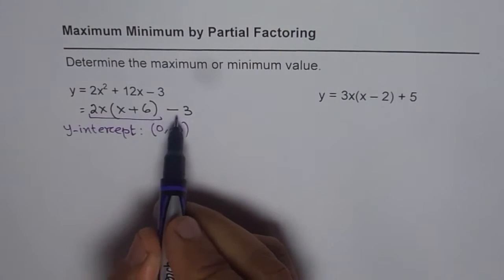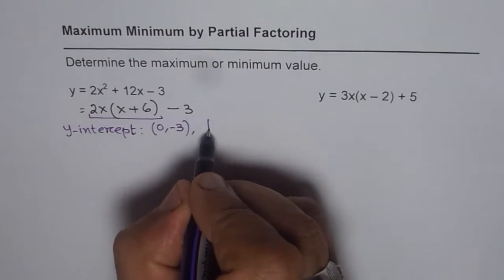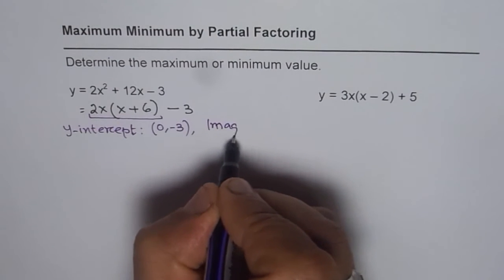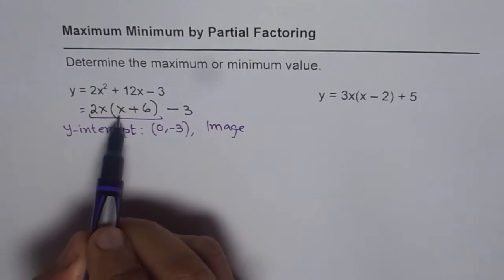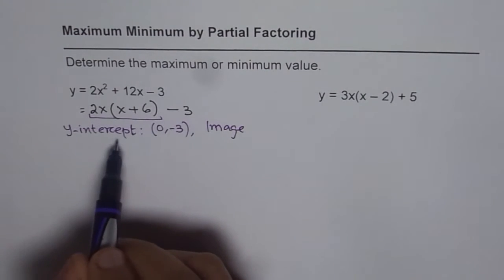Now we can consider image of this y intercept. Image will be when x is equals to minus 6, even then, y will be minus 3. So, that becomes the image of the y intercept.